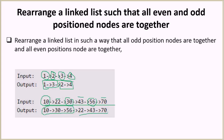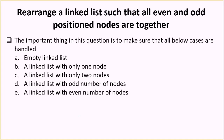This is the problem. The important thing is to make sure that you cover all the corner cases, which include: an empty linked list, a linked list with just one node, a linked list with just two nodes, a linked list with an odd number of nodes, and a linked list with an even number of nodes. The solution should work for all five cases.